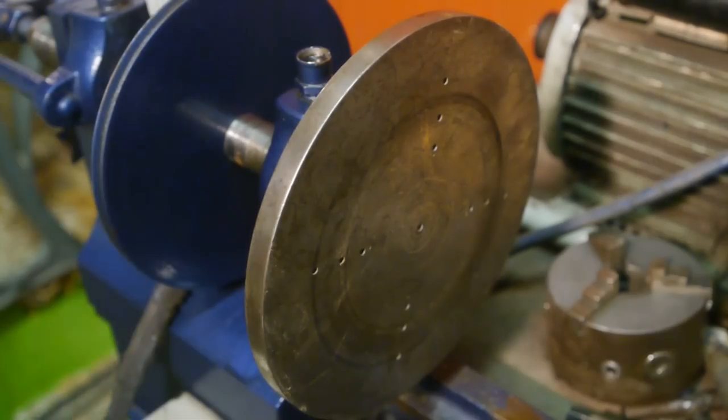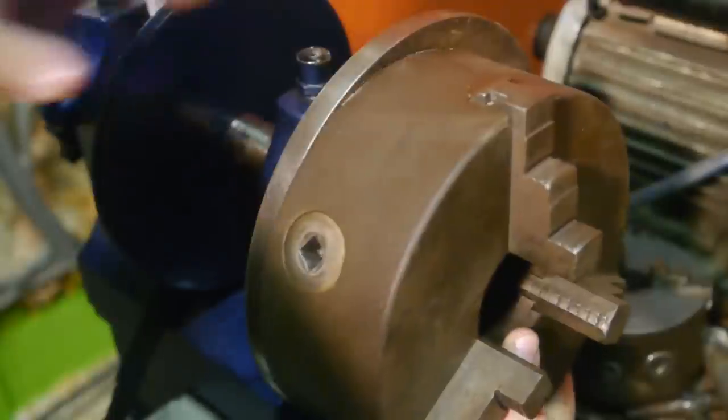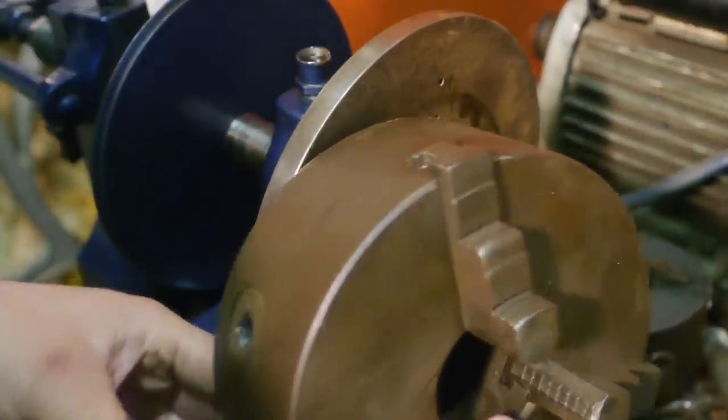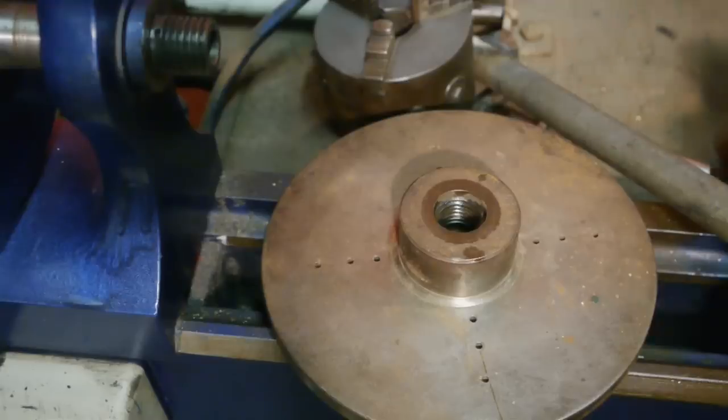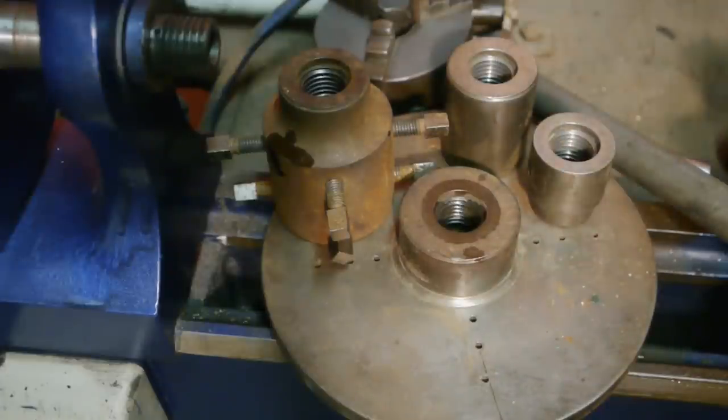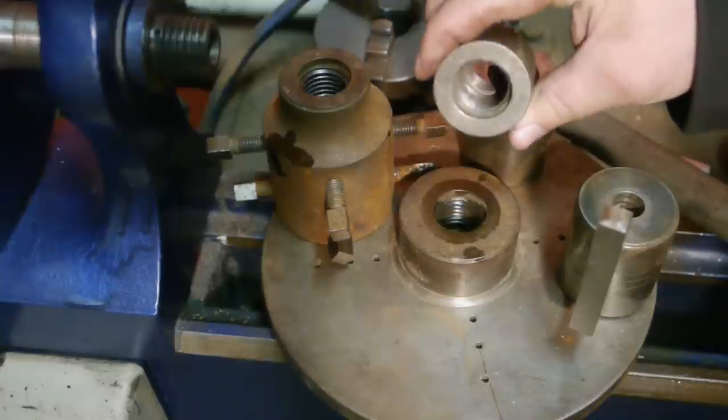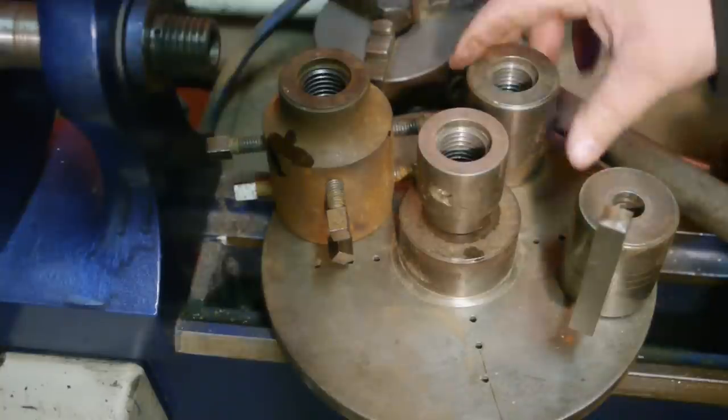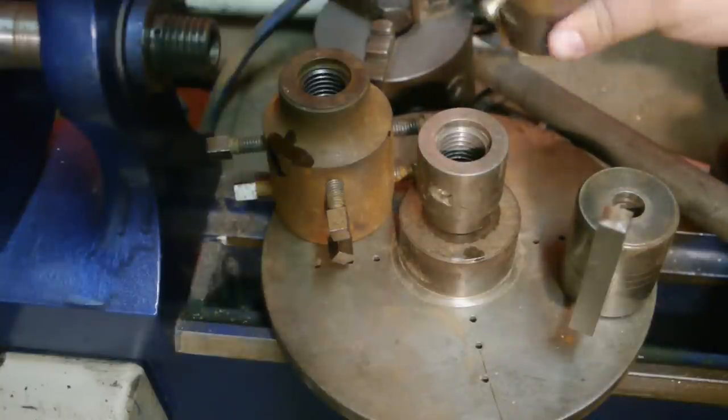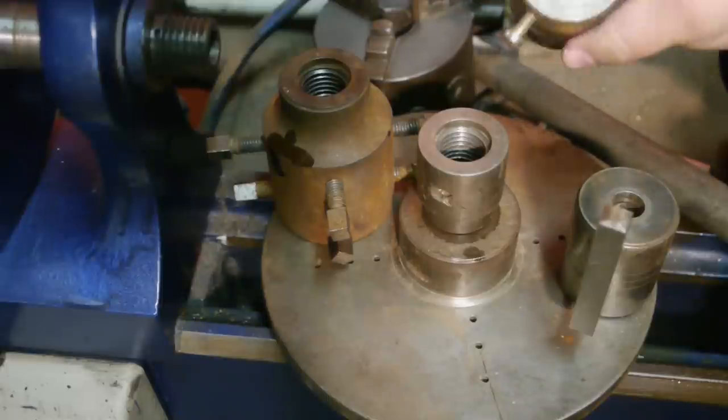I could also use this face plate to mount this old big chuck that I picked up last summer. Here are some other attachments that I got with the wood lathe. They should also fit this machine. This seems to be an adapter and this one here is some kind of holder.